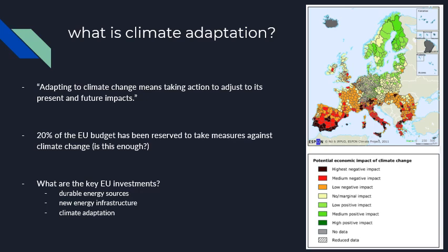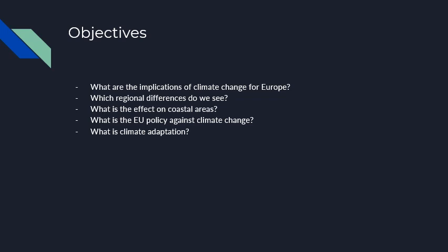Climate change also impacts economic sectors like tourism and agriculture. Looking at the map, the southern parts of Spain, Portugal, Italy, Greece, and France face enormous economic problems because of climate change — they will lose money as tourists stop visiting due to rising temperatures, extreme weather, and less water availability. I hope this gives you an image of what the implications of climate change are for Europe and how it changes the way we live.